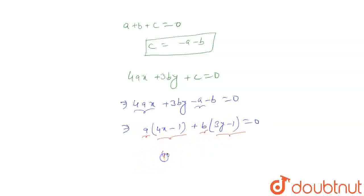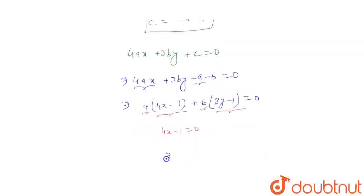Let's say 4x minus 1 will be 0. Then you can say x is equal to 1 by 4.